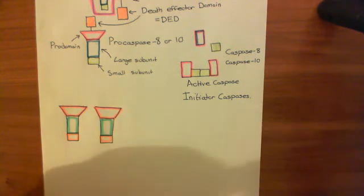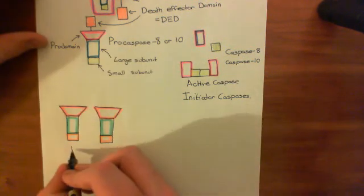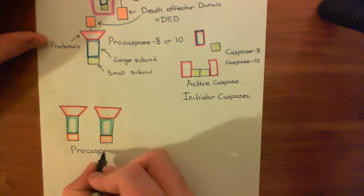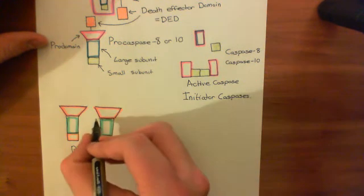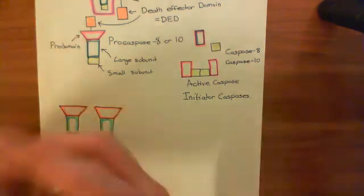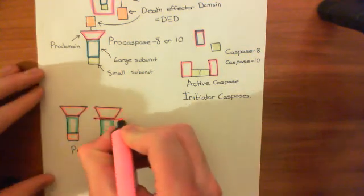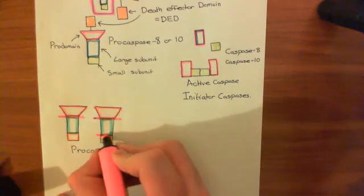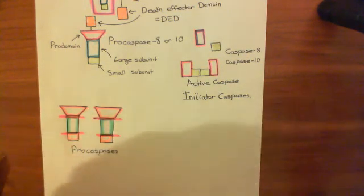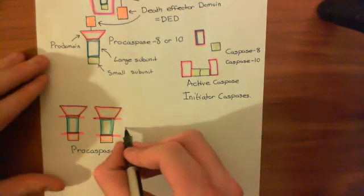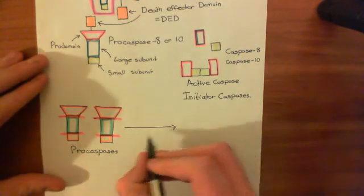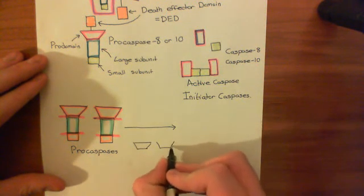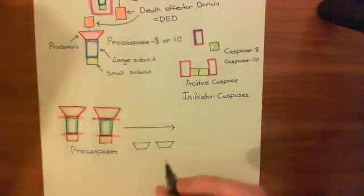These at the moment are pro-caspases, so they are not active. But in order to make them active, what you need to do is cleave at two sites. You need to cleave along here. This is the first cleavage site between the pro-domain and the large subunit, and then you need to cleave between here and here, between the large subunit and the small subunit. Basically, what you create is, firstly, the pro-domains go off. They're not important. So here are the pro-domains, which aren't important in this process. They're coming off.